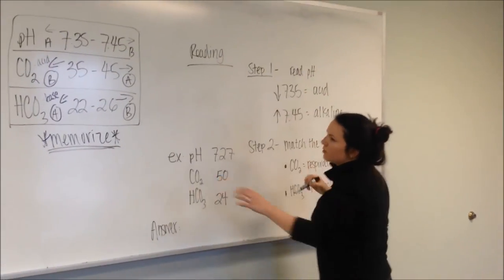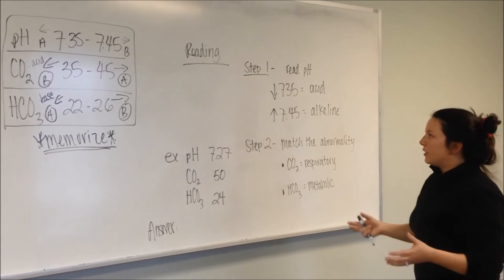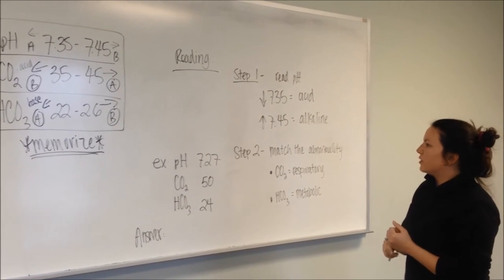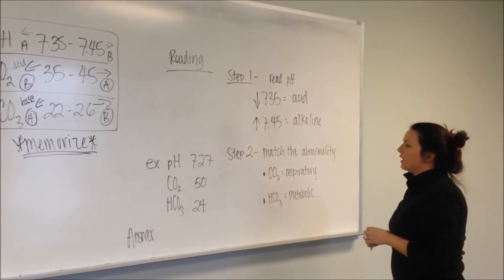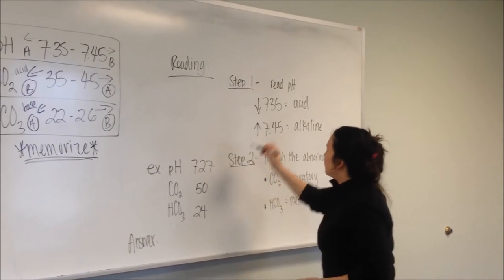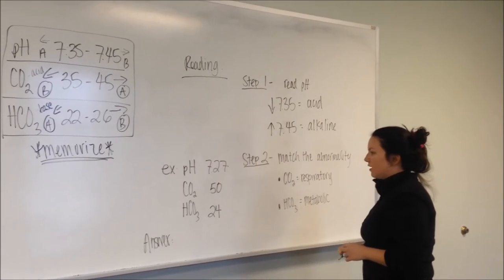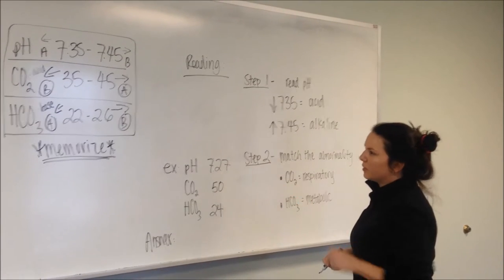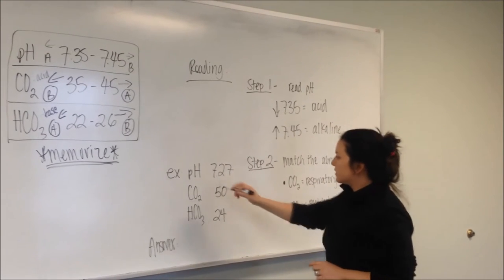So the respiratory therapy has drawn the blood and has brought you a numbered reading. What do I do with this? What do I do with these numbers? I'm going to follow two easy steps and find out what is wrong with my patient.